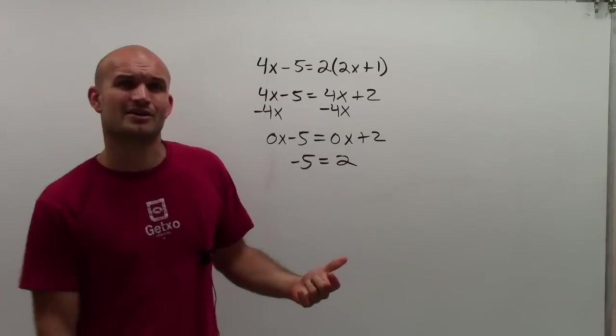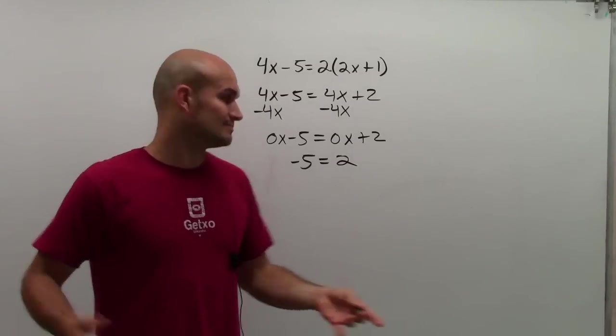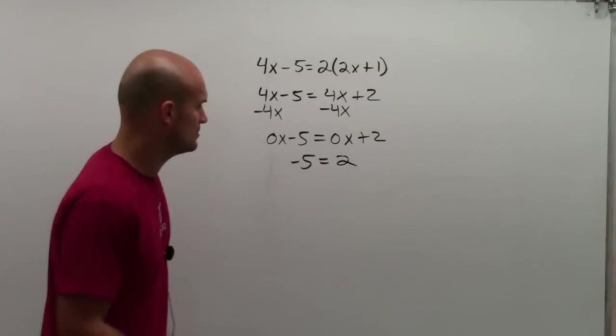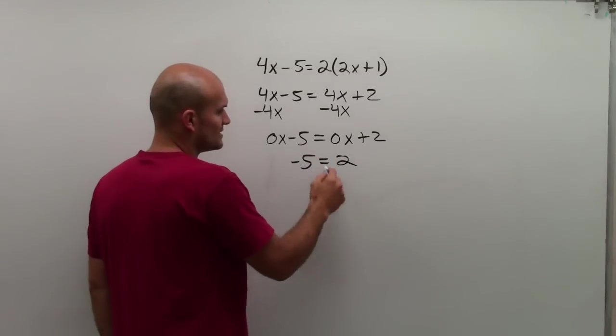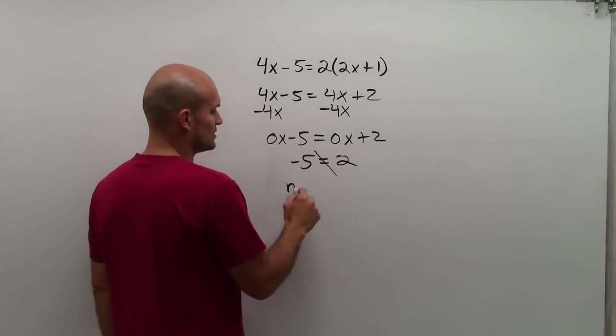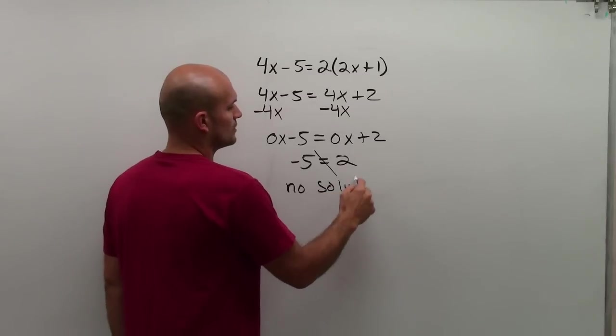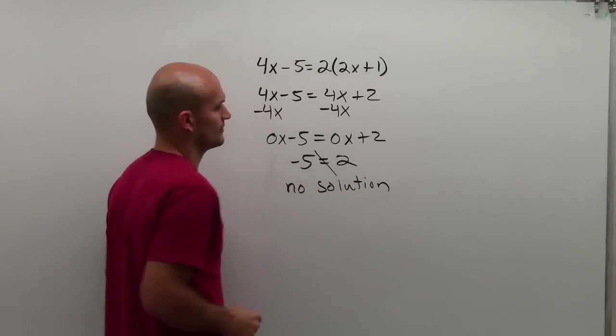No, they're not the same value. If you don't believe me, think about money. Is the value of negative 5 equal to the value of 2? No. So therefore, we say cancel out, say they're not equal to each other, and we say no solution.